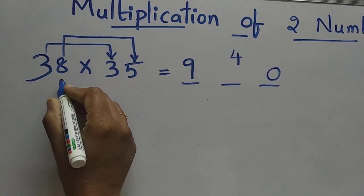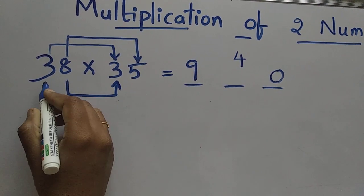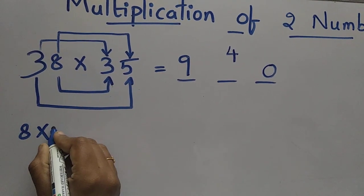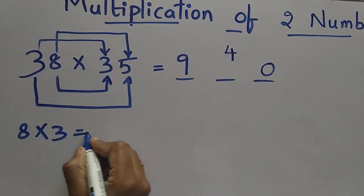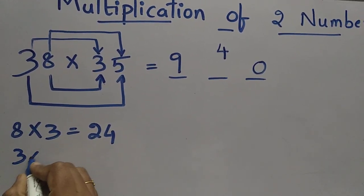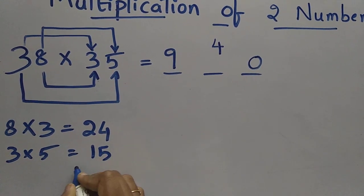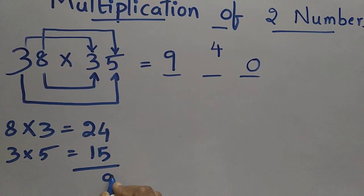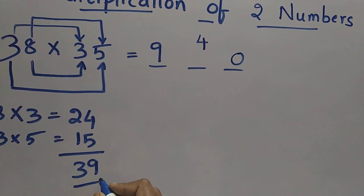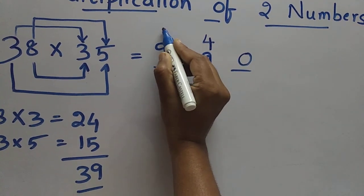After that we can multiply 8 with 3, and 3 with 5. 8 into 3 is 24, and 3 into 5 is 15. We can add these 2 — this is 39. For this 39 we can write 9 here and take 3 as a carry.